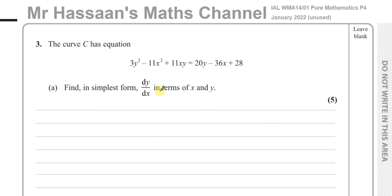It says the curve C has equation 3y² - 11x² + 11xy = 20y - 36x + 28. Find in simplest form dy/dx in terms of x and y.